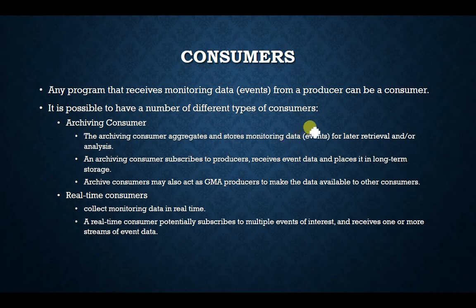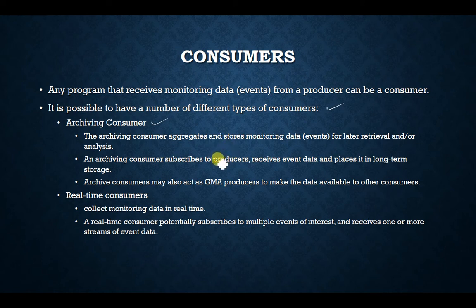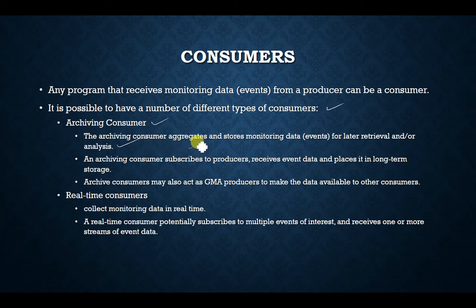Let us discuss the different types of consumers. A consumer is a program that receives monitoring data — called events — from a producer. There are several types. The archiving consumer aggregates and stores monitoring data for later retrieval and analysis. This type of consumer collects data from the producer, stores it, and uses it for historical purposes — analyzing problems that occurred — rather than working on a real-time basis.